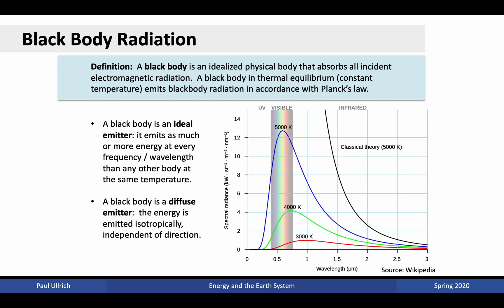Notably, the hotter an object is, the more energy it will radiate at any given wavelength. Even though the peak moves toward shorter wavelengths associated with higher energy photons, at any given wavelength a 5,000 K object will emit more than a 4,000 K object. There are two things about blackbodies to keep in mind: it is an ideal emitter — emitting as much or more energy at every wavelength than any other body at the same temperature — and it is a diffuse emitter, meaning energy is emitted isotropically, independent of direction.